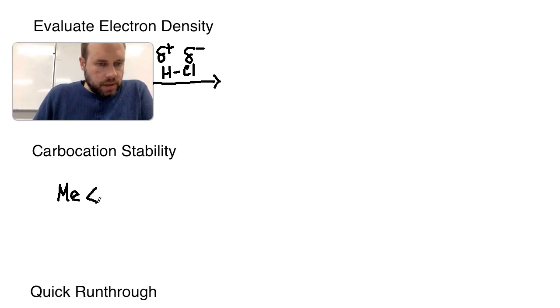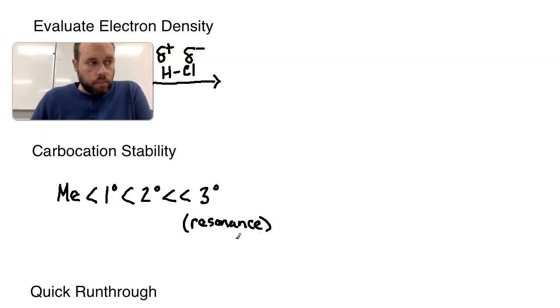As a general review, carbocation stability is going to be that methyls would be the least. In fact, those are so unstable or non-stable that they don't even exist. We don't contemplate or consider or give any credence to a methyl carbocation. Improved from there would be primary, again not very stable, secondary which is certainly plausible at that point, and then much greater than that would be the tertiary carbocation. There is also up in the tertiary realm any type of carbocation that could be resonance stabilized. If you have resonance available to delocalize a carbocation over two or more atoms, that would kind of be in the ranking of tertiary. It's hard to make a one-to-one comparison there.